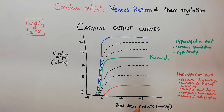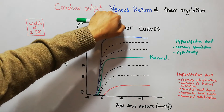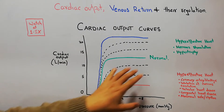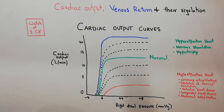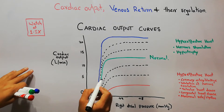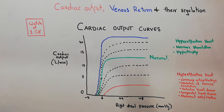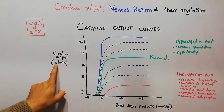Right atrial pressure increases or decreases based on the amount of blood returning to the heart — it is very much dependent upon venous return, among other factors. When the right atrial pressure is zero and we plot this against cardiac output, the two curves meet at a point where, with normal right atrial pressure, cardiac output is normal at around five liters per minute.